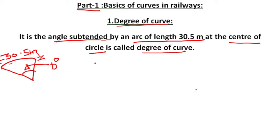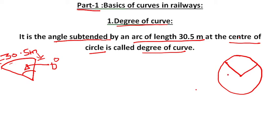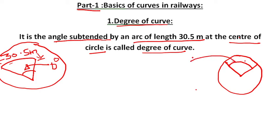Now I want to find out the relation between degree and radius of curve. Let us derive that. Let us take one circle. This is the radius. We have drawn a small arc — that same portion is shown here. This arc is of length 30.5 meters, which is also equal to 100 feet.